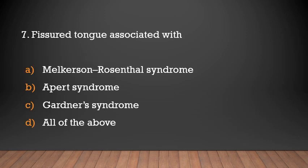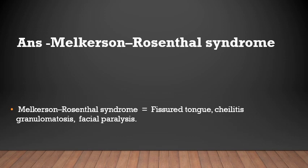Fissured tongue is associated with Melkersson-Rosenthal syndrome. Melkersson-Rosenthal syndrome is a rare neurological disorder characterized by facial paralysis, fissured tongue, and swelling of the face and lip known as orofacial granulomatosis.